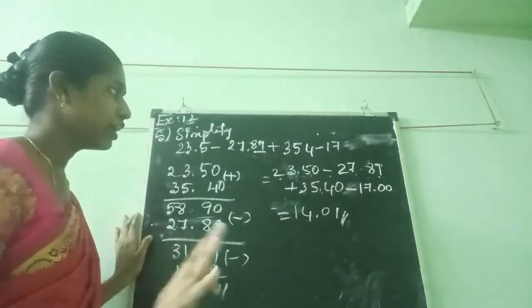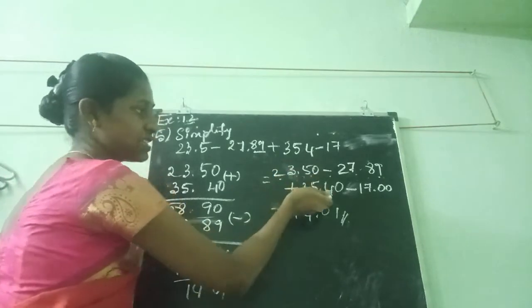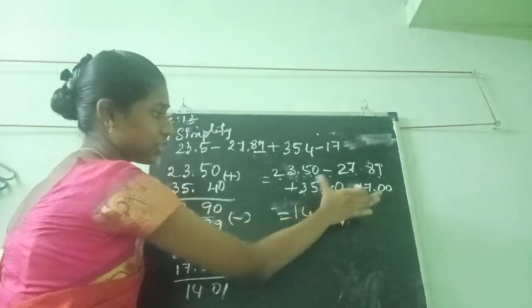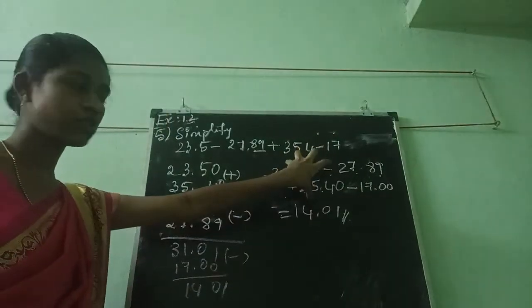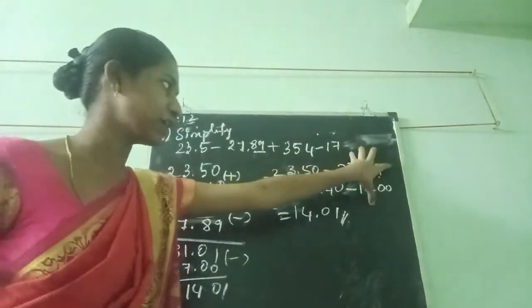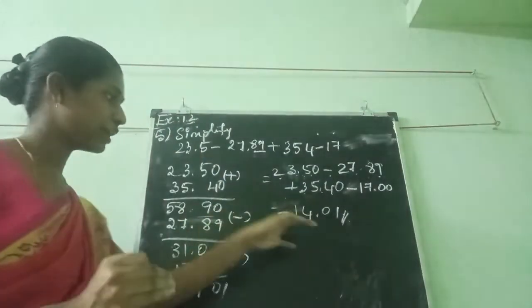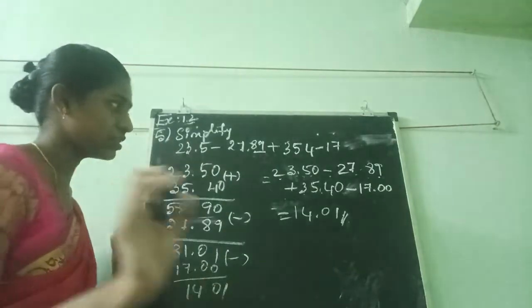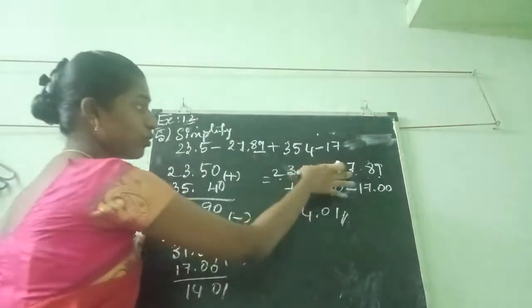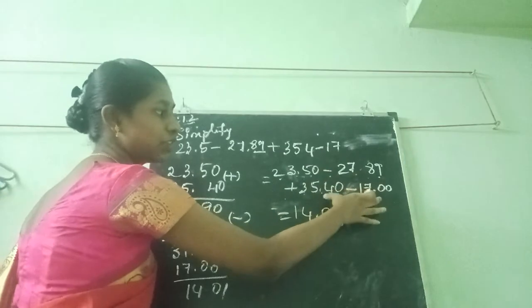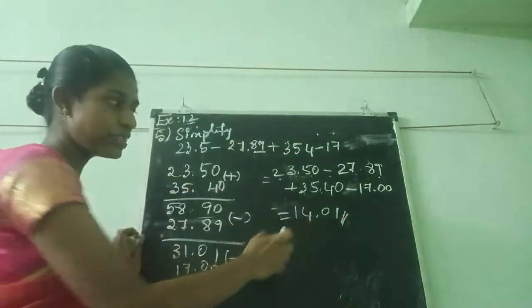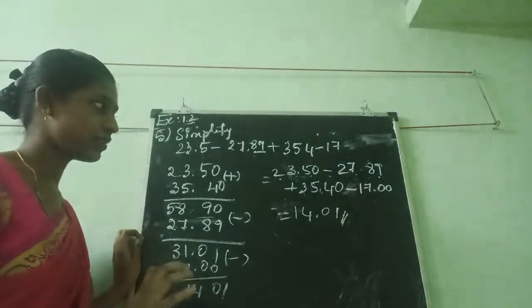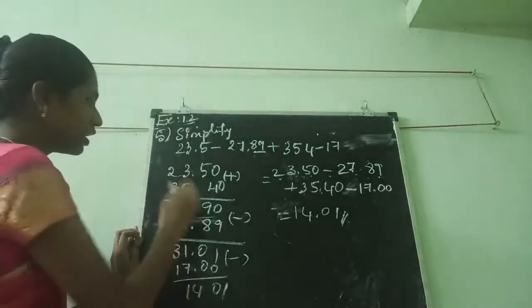Like this I put: 23.50 minus 27.89 plus 35.40 minus 17.00. Now we are going to see — in this we have 2 methods. That means plus-plus first. First we do the plus-plus additions, and then minus. The 2 answers you combine. We have a final answer. That is one method. Another method: minus these 2, then minus, and then plus. Like this there are 2 methods. I am putting in one method — doing the addition first.